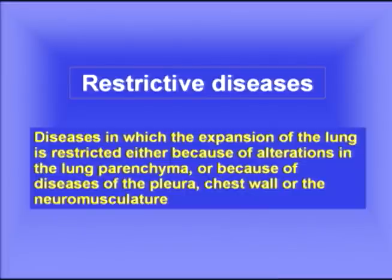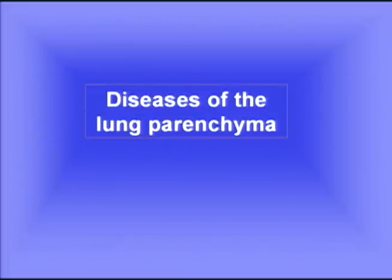Restrictive diseases are diseases in which the expansion of the lung is restricted, either because of alterations in the lung parenchyma — which we're going to be talking quite a bit about — or because of diseases of the pleura, the chest wall, or the neuromusculature. Let's start by looking at diseases of the lung parenchyma. By parenchyma we mean the gas exchanging regions of the lung, the alveolar regions. We should start by reviewing the anatomy, histology, and fine structure of the gas exchanging regions.